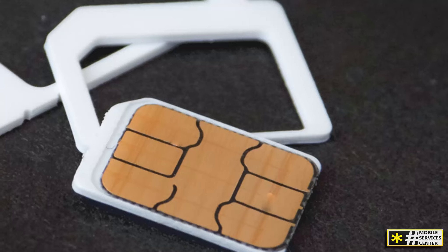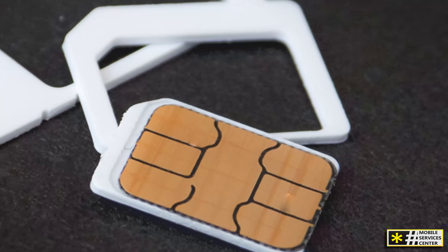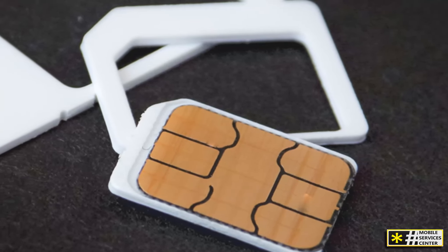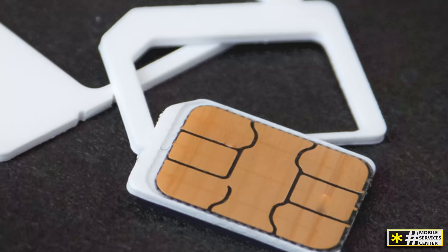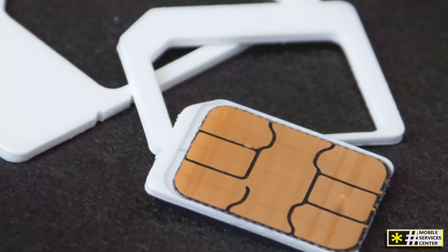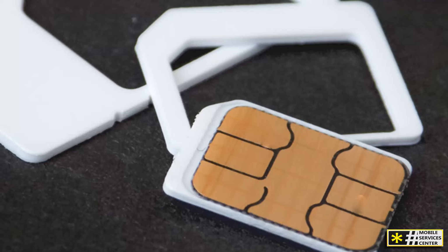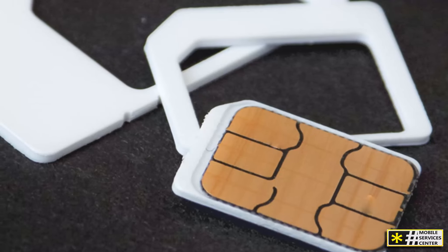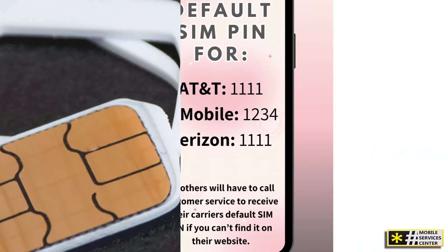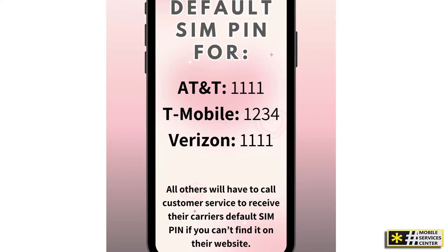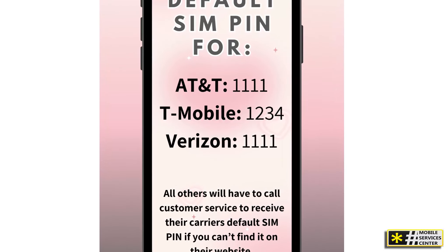When you first set up your T-Mobile SIM card, it may come with a default PIN. This default SIM PIN is typically set by the carrier to ensure your SIM card is protected right out of the box. For T-Mobile, the default SIM PIN is usually 1234 or 0000.